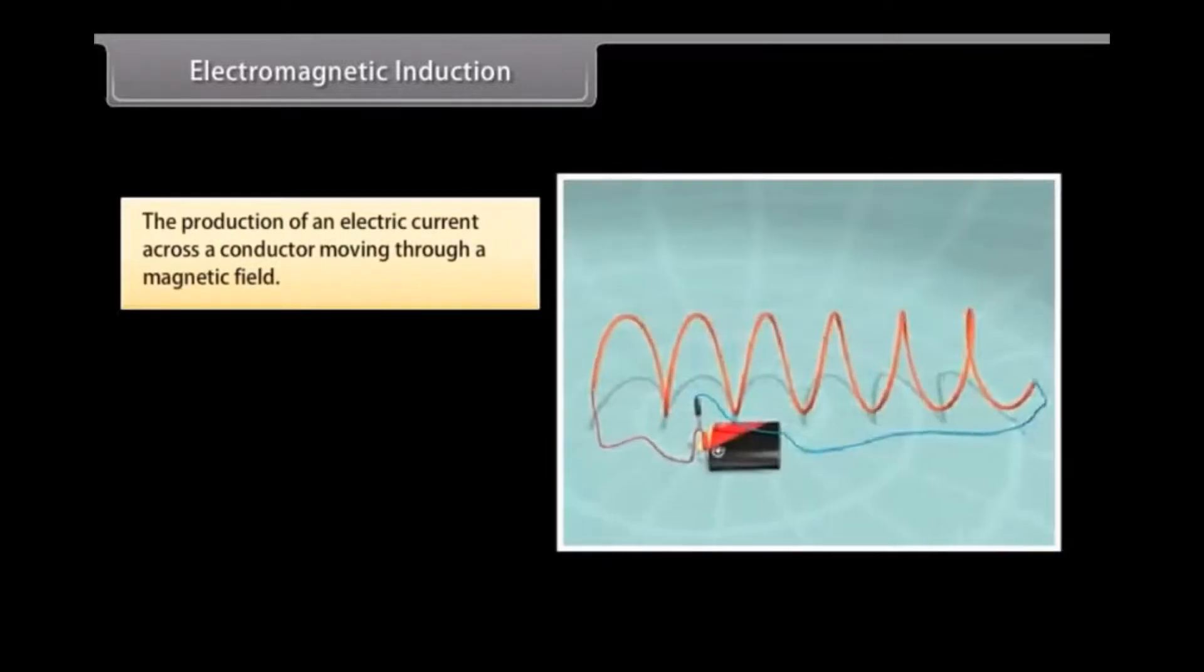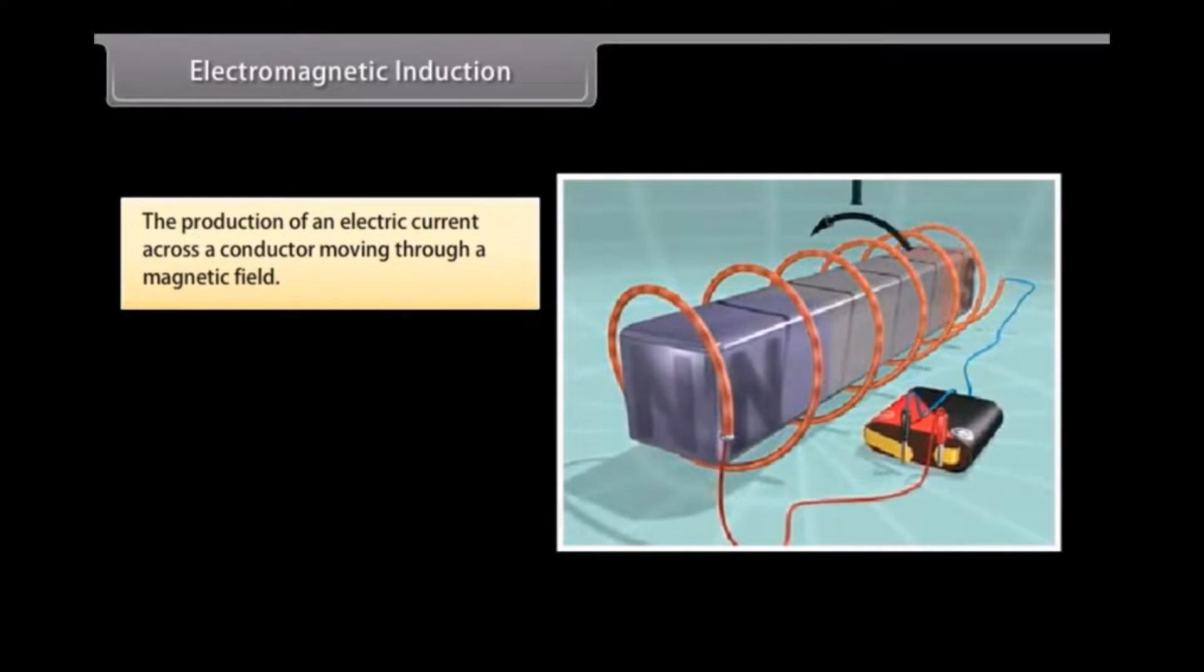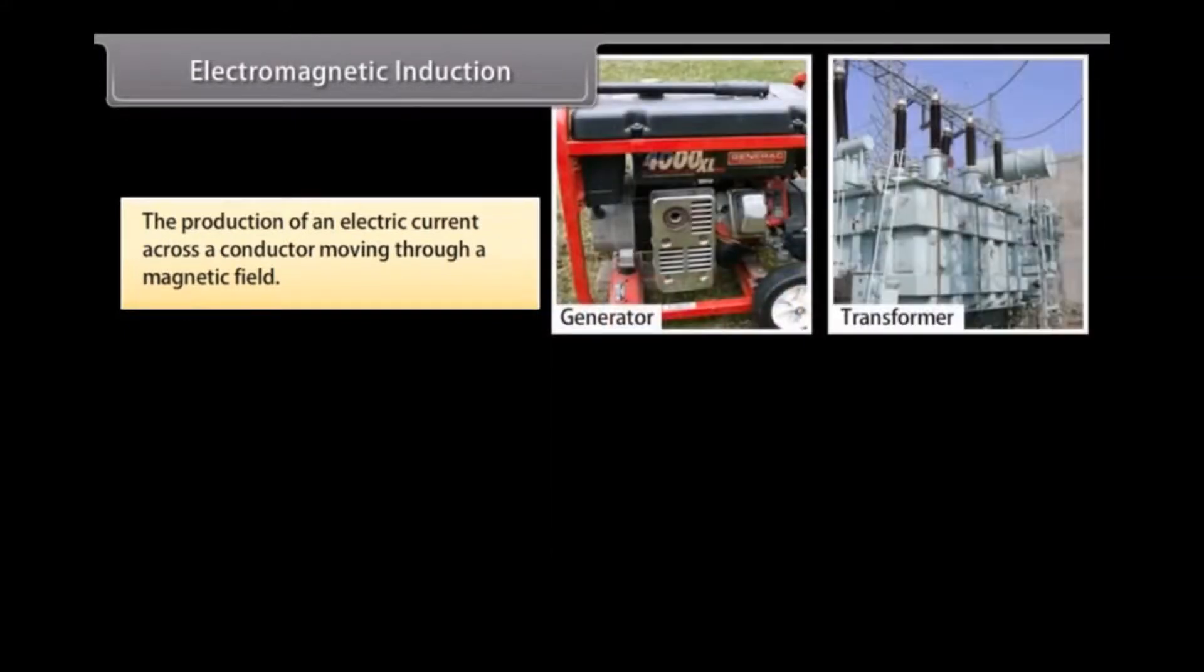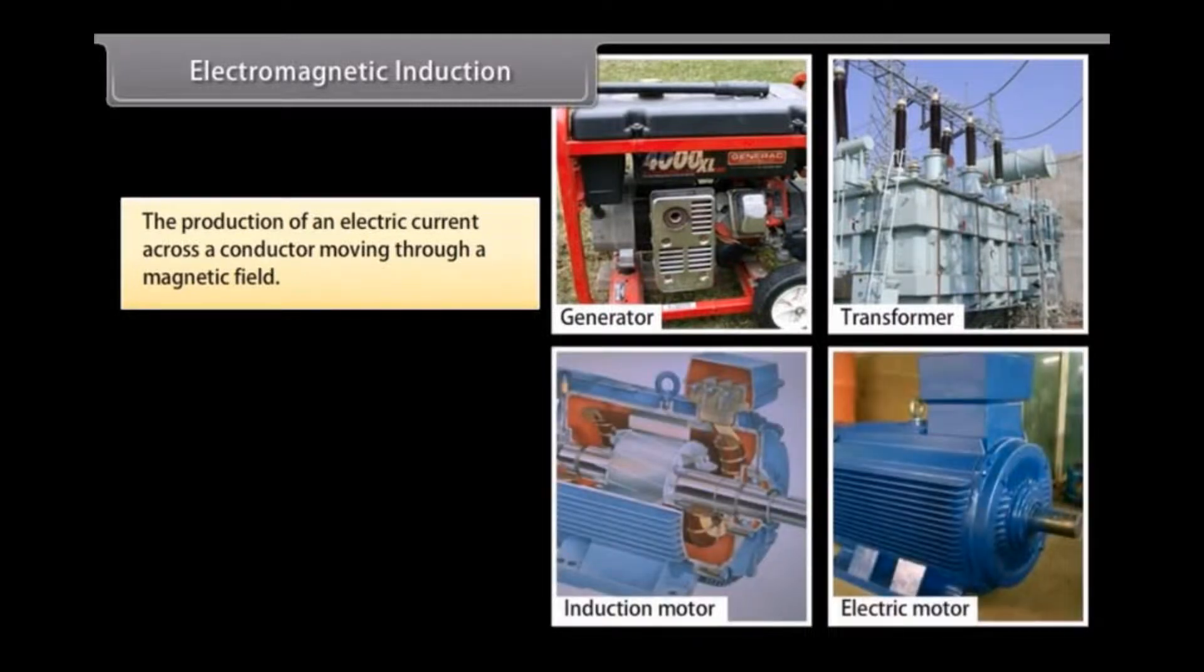Electromagnetic Induction. The production of an electric current across a conductor moving through a magnetic field is called electromagnetic induction. For example, generators, transformers, induction motors, electrical motors, synchronous motors, and solenoids all use electromagnetic induction.